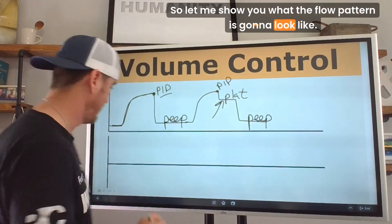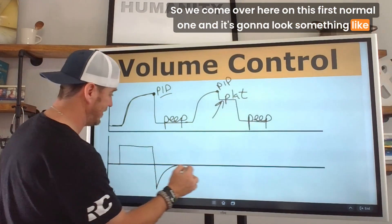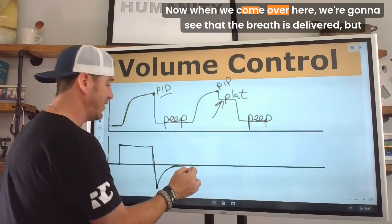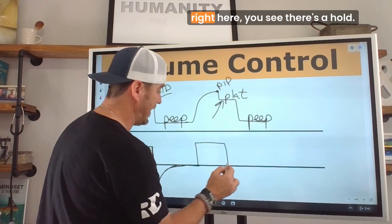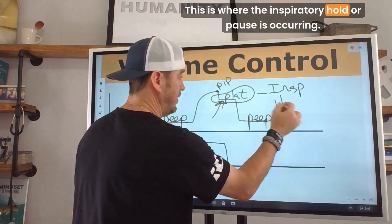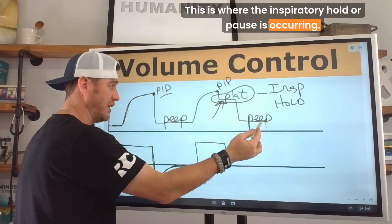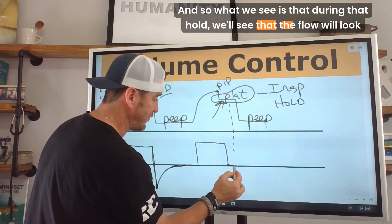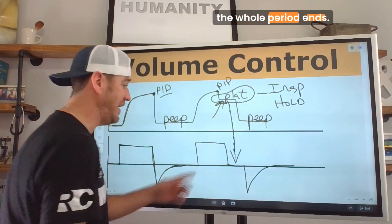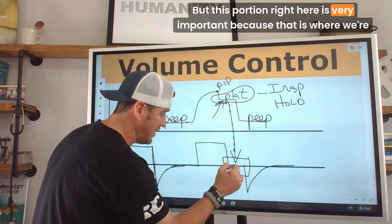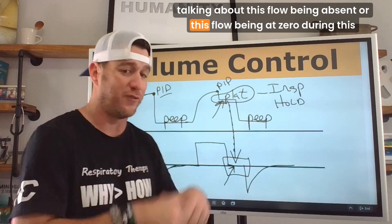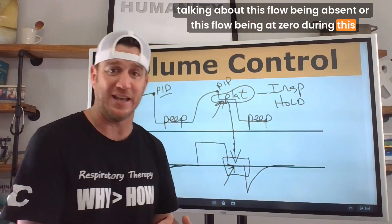Let me show you what the flow pattern looks like. On a normal breath, flow is delivered in a constant flow pattern and then we exhale. When we perform the hold, the breath is delivered and then right here you can see there's a hold occurring — the inspiratory hold or pause. During that hold, the flow will go to zero, and then exhalation happens when the hold period ends. This portion where flow is absent is critical to the assessment of plateau pressure.